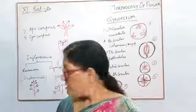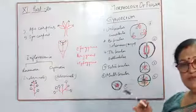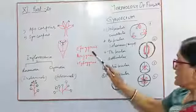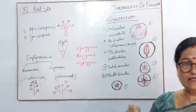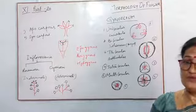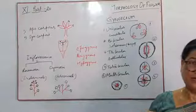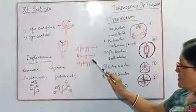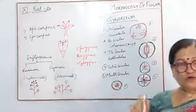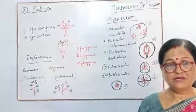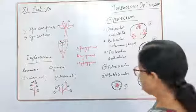Epigynous, perigynous, and hypogynous — I have already explained these. Epigynous: the ovary is present below the other floral parts. Perigynous: 'peri' means periphery — all the floral parts are arranged along the periphery of the ovary. Hypogynous: all the floral parts are below the ovary and the ovary is superior.